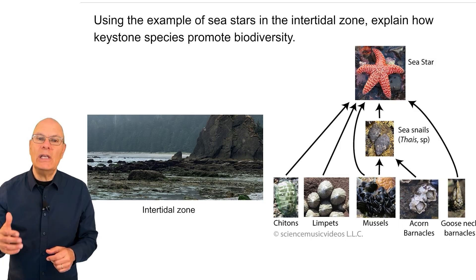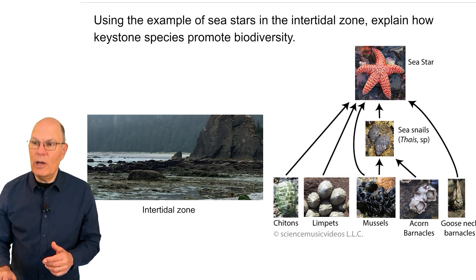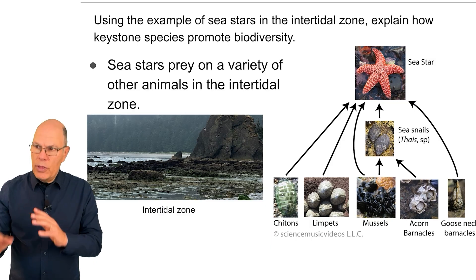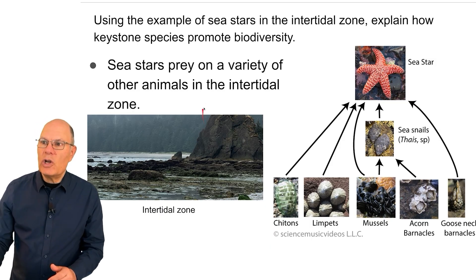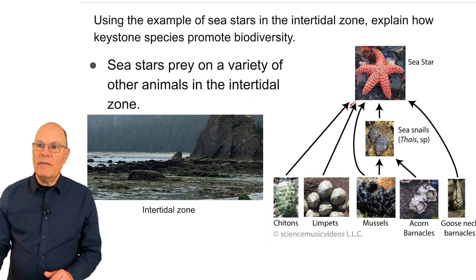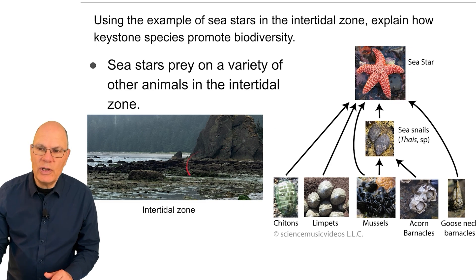Using the example of sea stars in the intertidal zone, explain how keystone species promote biodiversity. Sea stars are predators, and they prey on a variety of other animals in the intertidal zone.